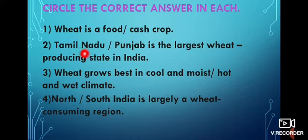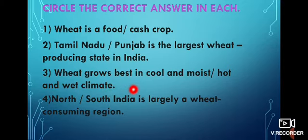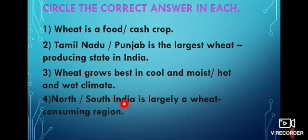Number 2: Tamil Nadu or Punjab is the largest wheat producing state in India? Yes, it's Punjab. Number 3: Wheat grows best in cool and moist or hot and wet climate? It grows in cool and moist climate. Number 4: North or South India is largely a wheat consuming region? North Indian peoples use wheat.